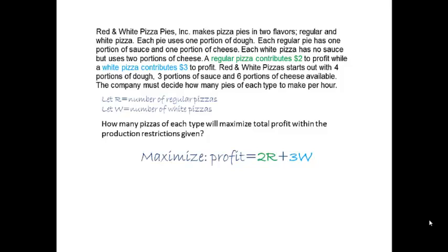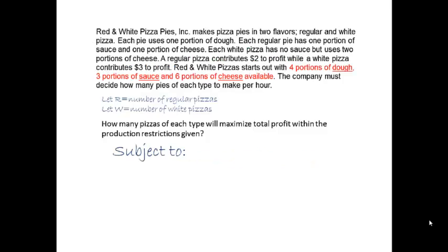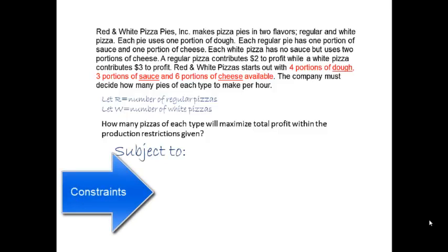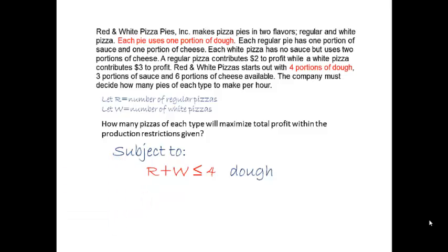The next part of linear programming formulation is to write mathematical expressions for the limited resources. They are called constraint equations because the resources are limited or constrained. Usually, as in this problem, there are several. The pizza problem has three limited resources: dough, sauce, and cheese. So there will be three constraint equations. A regular pizza uses one portion of dough per pie, or 1R. Also one portion of dough per white pizza, or 1W. All the dough used by R regular pizzas and W white pizzas will be R plus W.